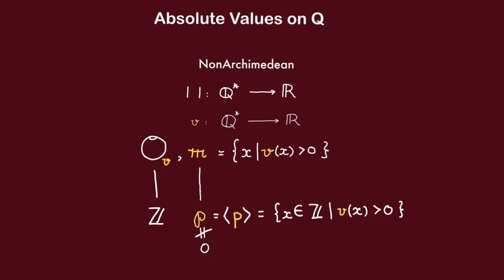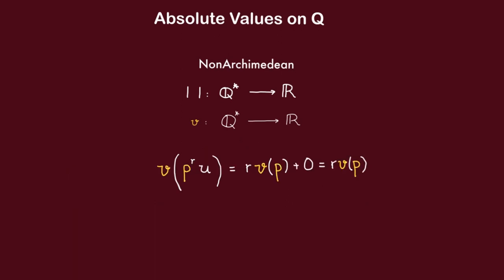And now, again, since this ideal consists of exactly the elements of Z with positive valuation, we see that any integer not divisible by P must have valuation 0. Thus, we see that the valuation V can be described as follows.